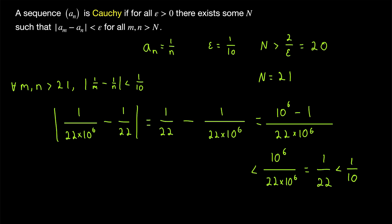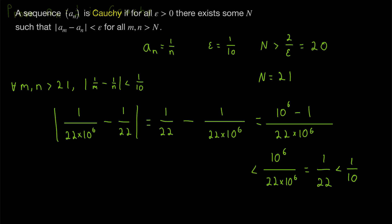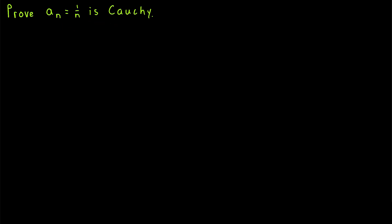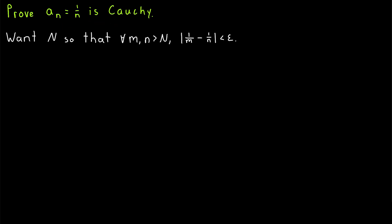Again, we'll prove that Cauchy sequences and convergent sequences are actually the same in a future lesson, and I'll leave a link to that in the description. Finally, let's go ahead and prove that the sequence 1 over n is, in fact, Cauchy. By definition, in order to do that, we need to find a big N so that any two terms of the sequence after the big N-th term are within an arbitrary positive epsilon of each other. So what we're going to go through here is scratch work that we can then use to write the actual proof.